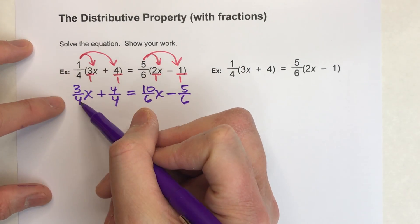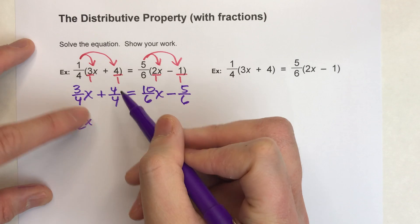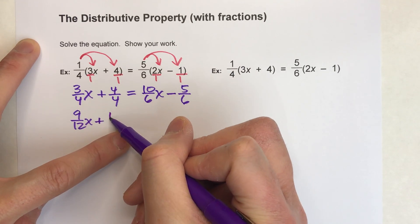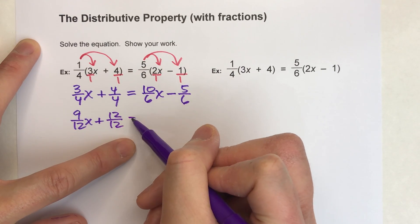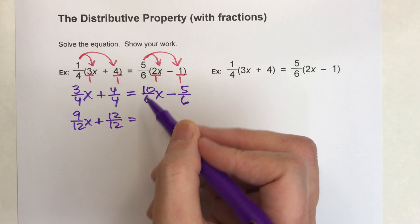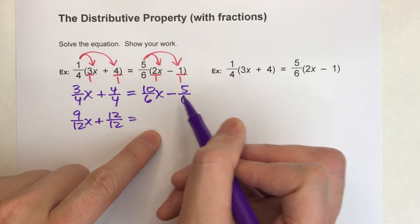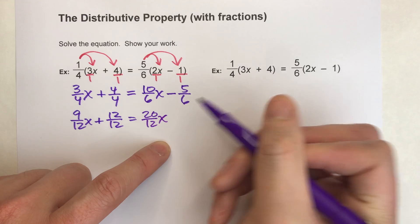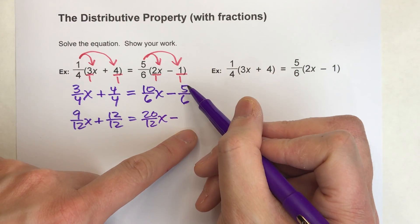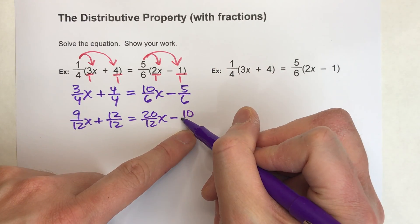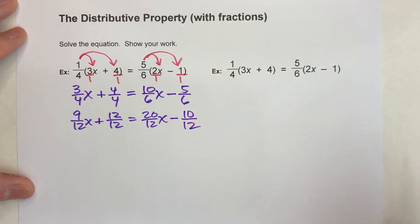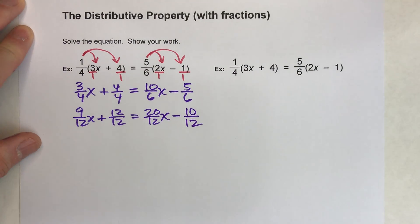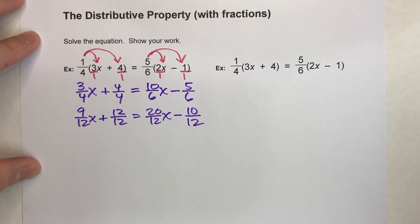Alright, so 3/4 is 9/12. 4/4 is 12/12, because I'm just multiplying the top and bottom by 3. On the other side, I'm going to multiply the top and bottom by 2 to get 12ths, so this is 20/12x minus, and then 5/6 multiply the top and bottom by 2, that's 10/12. Alright, so now this is going to be a lot easier to solve.